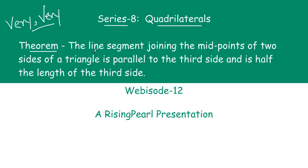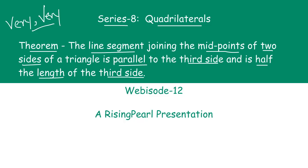The theorem states that the line segment joining the midpoints of two sides of a triangle is parallel to the third side and is half the length of the third side. You may wonder why we are talking about triangles in a series on quadrilaterals — we will come to that in a moment. First, let us understand what this theorem says and how we can prove it.